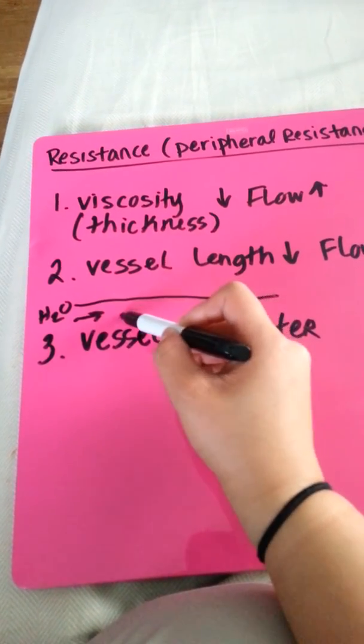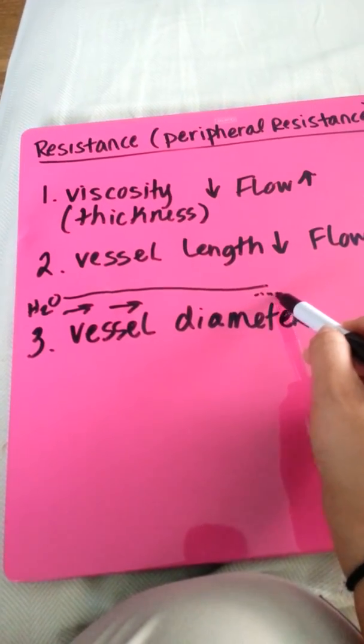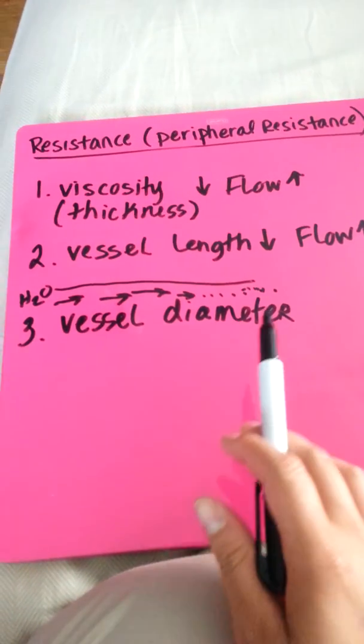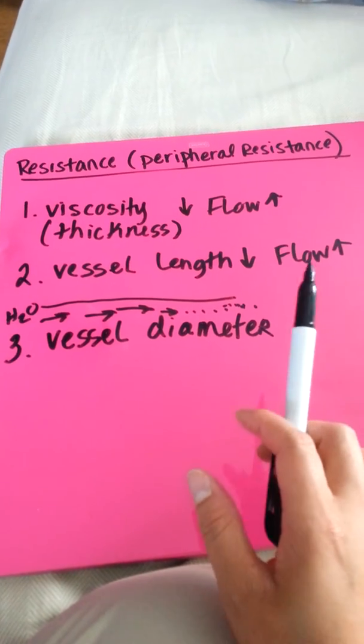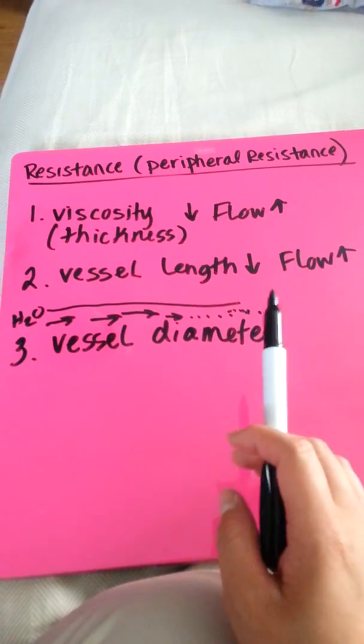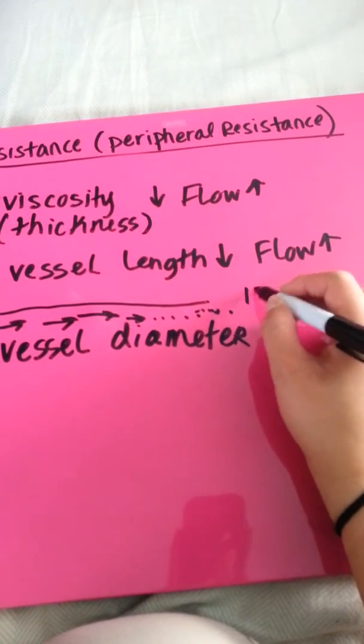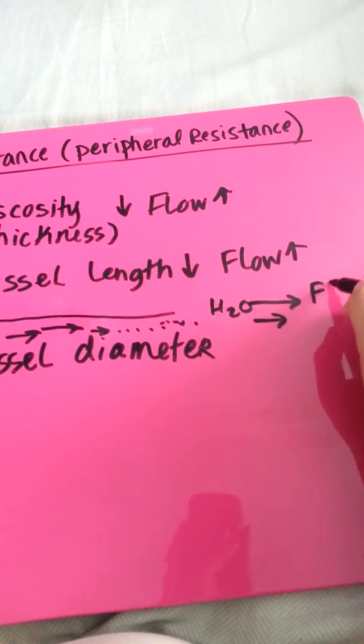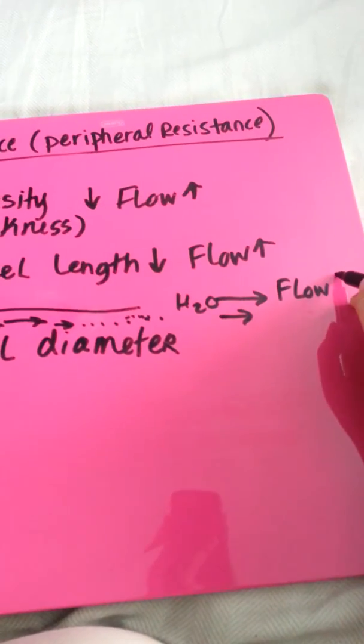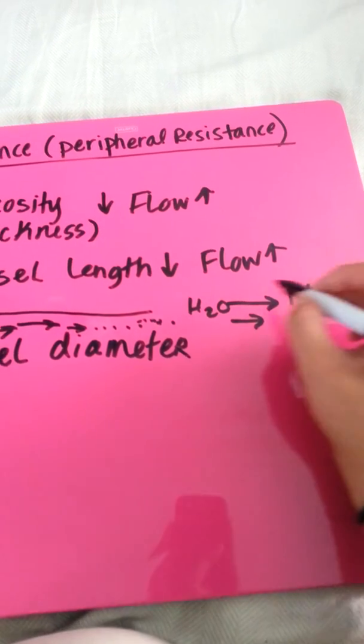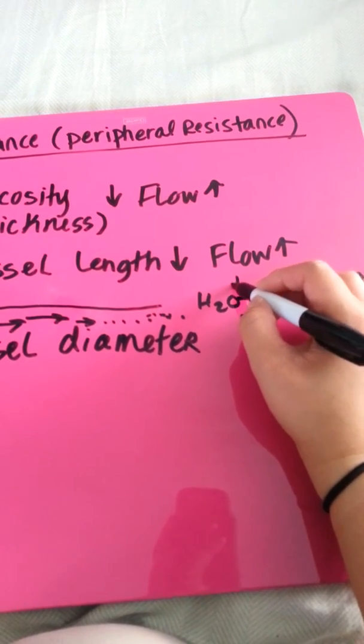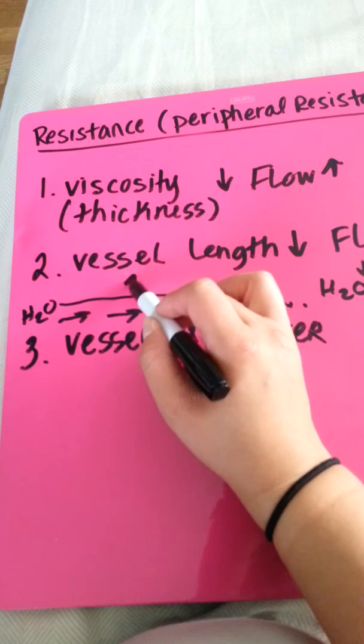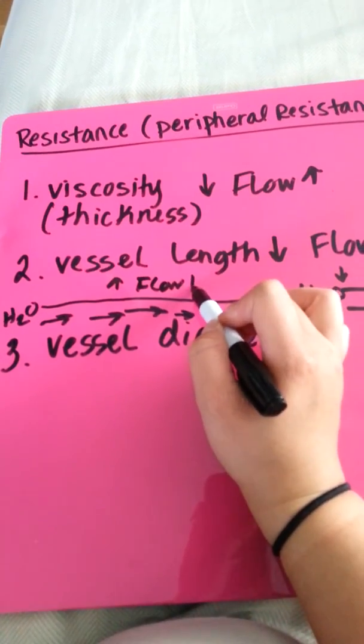Okay, the longer the hose, the longer the flow, the flow decreases. The shorter the vessel, the flow increases. Okay, so shorter the length, the flow increases. Longer the length, flow decreases.